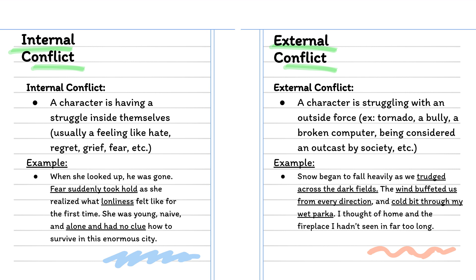An internal conflict is a problem that a character has within themselves. It is going to be expressed in some sort of negative feeling or emotion, such as hate, fear, guilt, regret, grief, etc. Looking at the example, this is what it would look like in the text: 'When she looked up, he was gone. Fear suddenly took hold as she realized what loneliness felt like for the first time. She was young, naive and alone and had no clue how to survive in this enormous city.' Here we see the character is struggling with an internal conflict. She feels negative emotions such as fear, loneliness, and cluelessness.